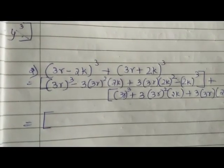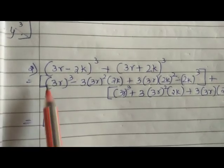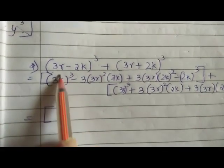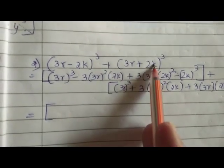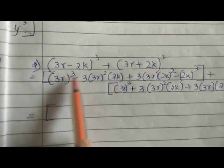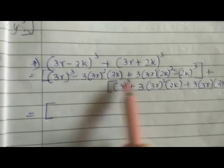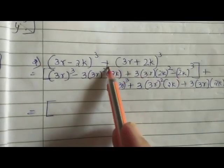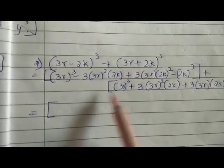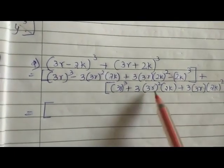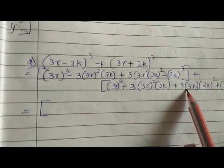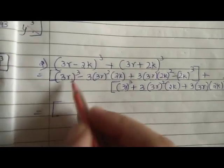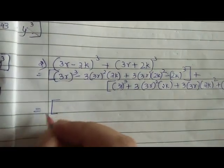For the second question, we use the (a-b)³ formula for the first bracket and (a+b)³ for the second bracket. For (a-b)³: a³ - 3a²b + 3ab² - b³, then close the bracket. For the second bracket using (a+b)³: a³ + 3a²b + 3ab² + b³. Now we find the cube of 3r.